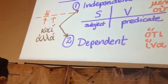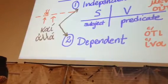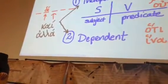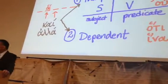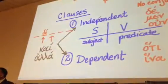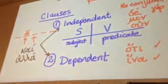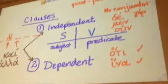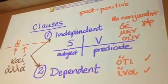So those are the two conjunctions that can occur at the beginning, and introduce either an independent or a dependent clause. Now, that's more than Mounce does with this, this early in the lesson, but I want you to be aware of that.